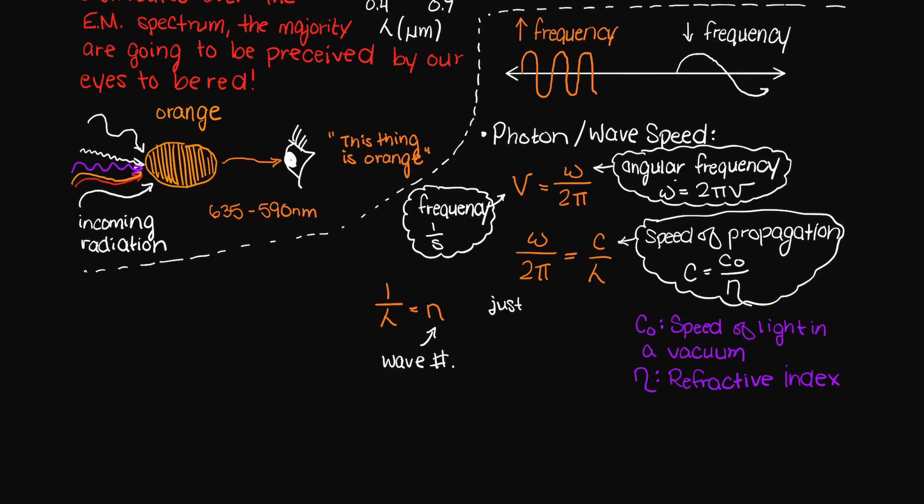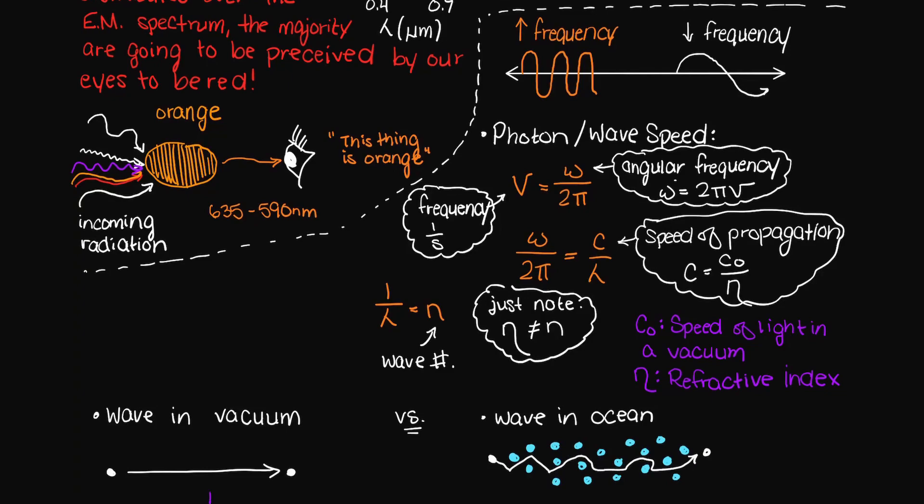The speed of propagation is how fast our wave can travel in certain mediums. So, it would make sense that our wave could travel quicker through a vacuum where there is nothing to hit versus the ocean where there are many water molecules that it may bump into.